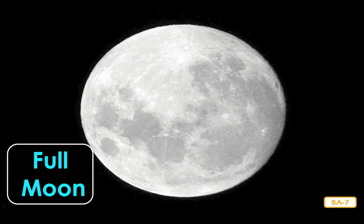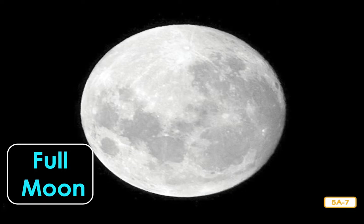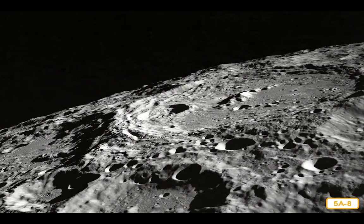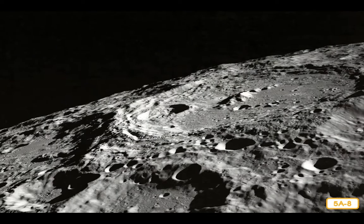Some people say they see what looks like a man's face when they look at the full moon — that is why people sometimes talk about the man in the moon. In reality, there is no face on the moon, just a big, round rock. People sometimes see what looks like a face because of the dark areas on the moon's surface. These dark areas are places where, a long time ago, lava from inside the moon poured out onto the surface. These areas no longer have lava in them, but the holes left behind reflect sunlight differently than the rest of the moon's surface.